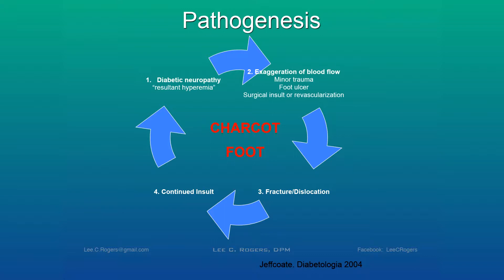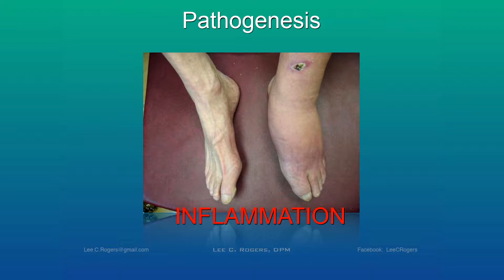The most important thing is that Charcot foot starts out as an inflamed foot. Anytime you see a hot, red, swollen foot in the presence of diabetes and neuropathy, it should be Charcot foot until proven otherwise. We should start with the more urgent treatments, because this is a medical emergency — we have an opportunity to intervene and alter the natural course, ultimately preventing a disastrous dislocation that can happen in a matter of days once the inflammation starts.